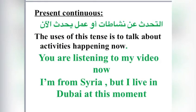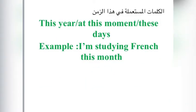Second, present continuous. We use it to talk about activities happening now. For example: 'You are listening to my video now.' 'I'm from Syria, but I live in Dubai at this moment.' Key time expressions for this tense include: this year, at this moment, these days. Example: 'I'm studying French this month.'